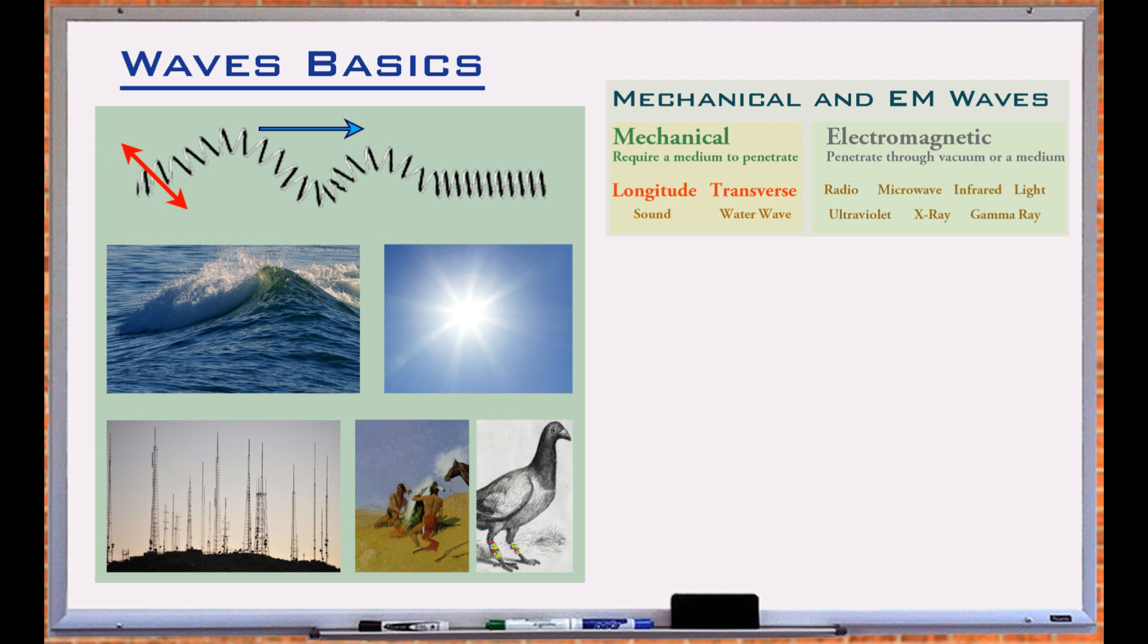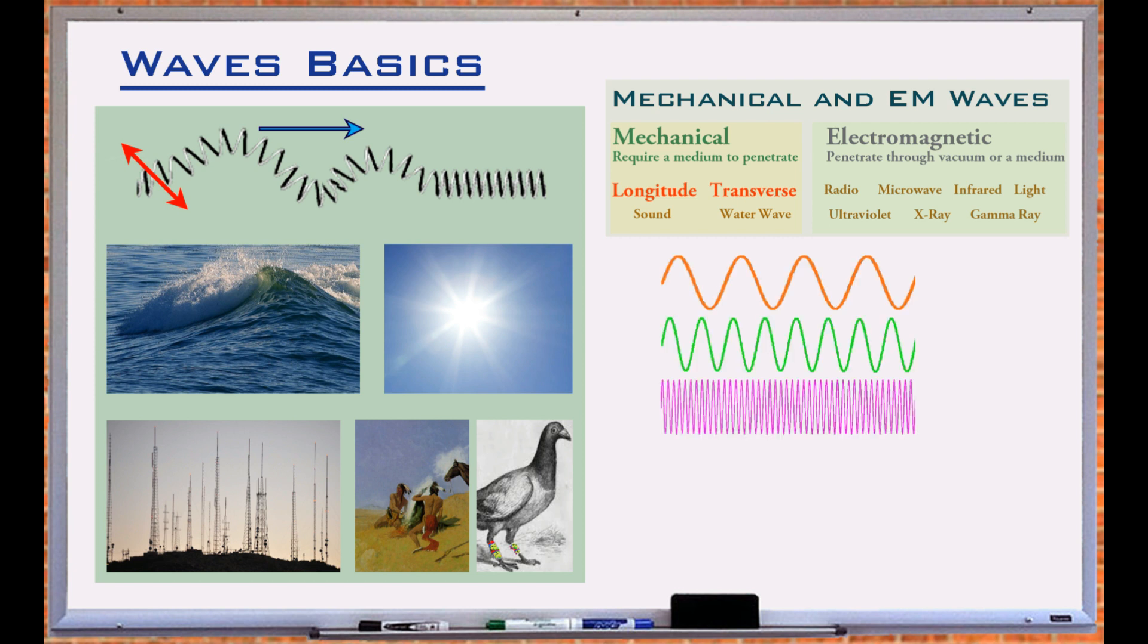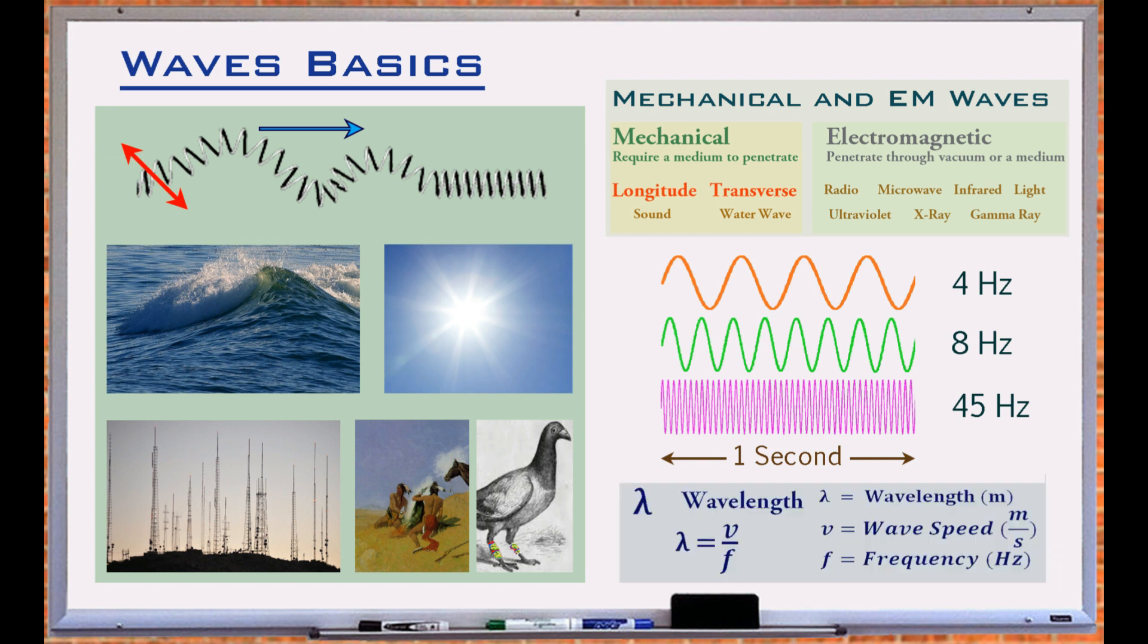Wave frequency is another important property of a wave. It relates to the number of times the wave repeats. It is measured in Hertz, the number of cycles of the wave in one second. The distance over which a wave repeats is defined as wavelength.